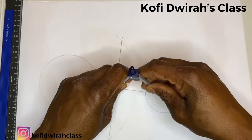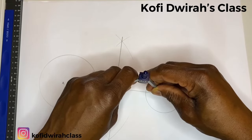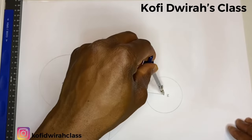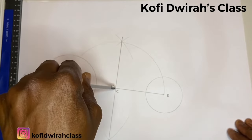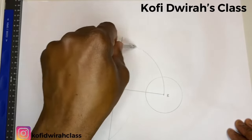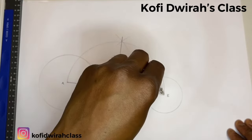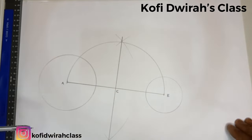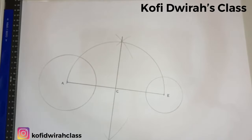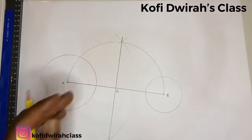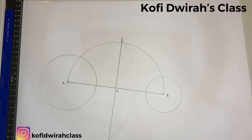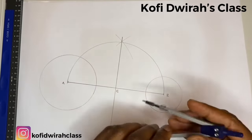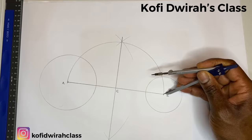At point C you draw a semicircle from A to B, you draw a semicircle. Good. So this point, we have point A, point B, then we have our semicircle. Then you measure the radius of the smaller circle.